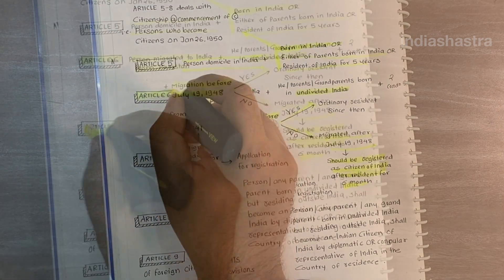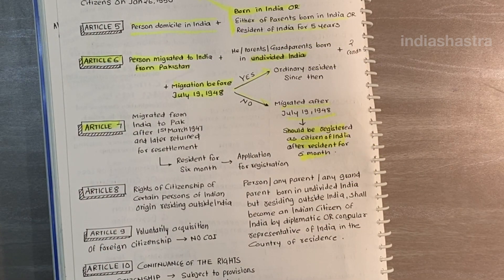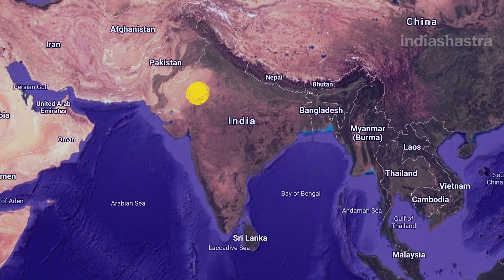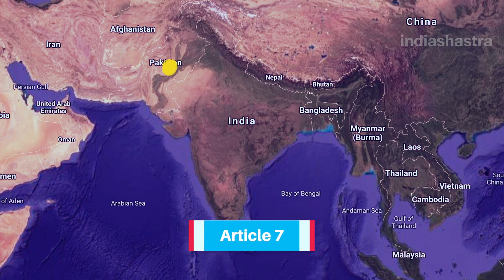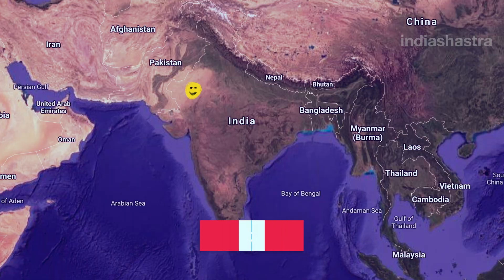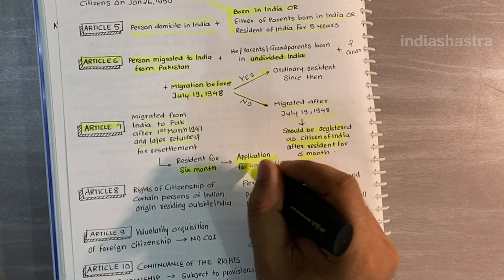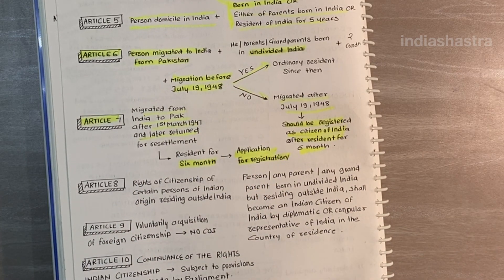Article 7 deals with a person who migrated to Pakistan from India after 1st March 1947. If such a person figured out a better place to live and returned for resettlement to India, he shall become a citizen of India after residing in India for 6 months and completing registration under Article 7.